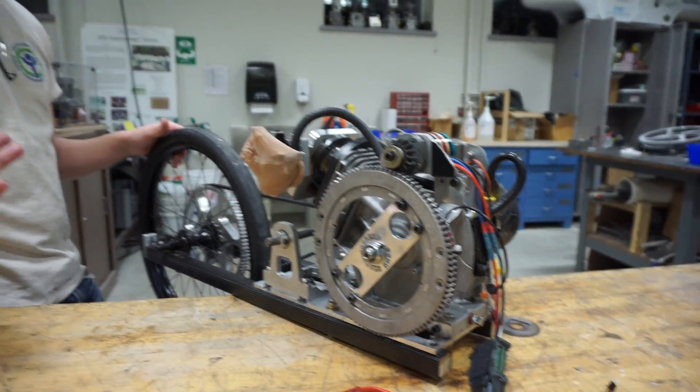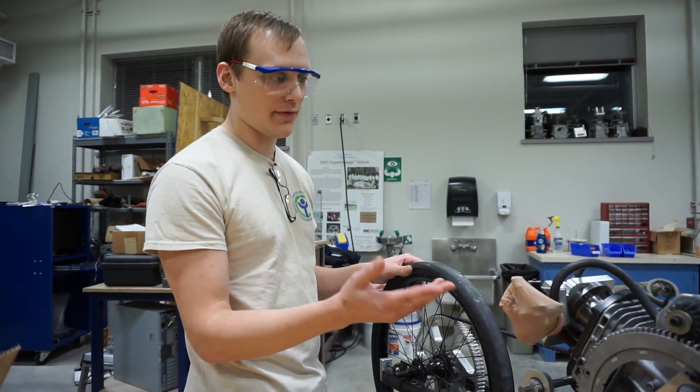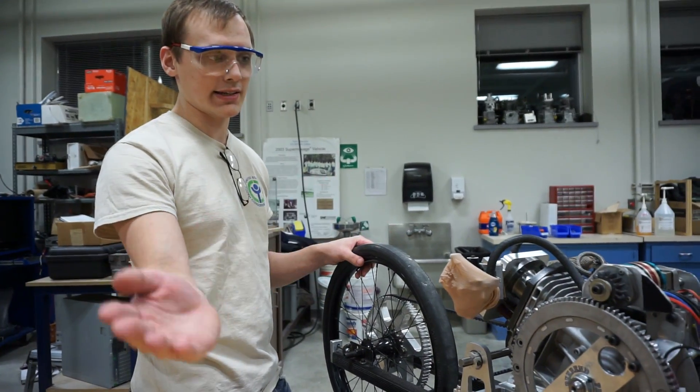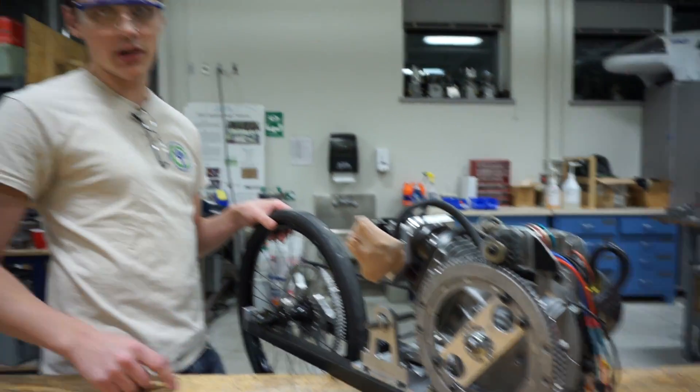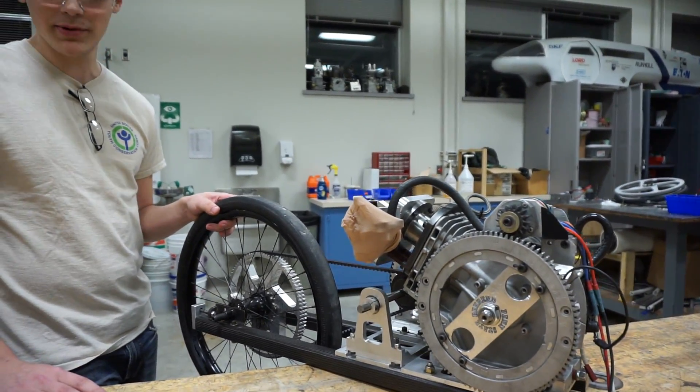And the issue with spinning the engine any faster than that was that you started to have valve float issues. So, even though we would like to center peak efficiency in our range, we mechanically can't do it. I see. So, that was the best gearing ratio we could get.